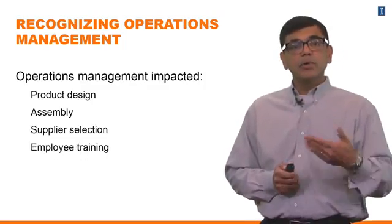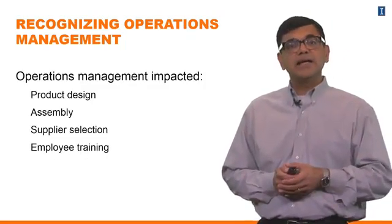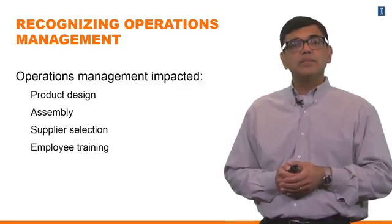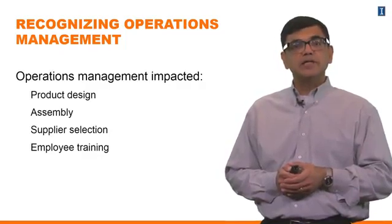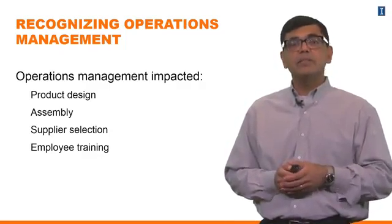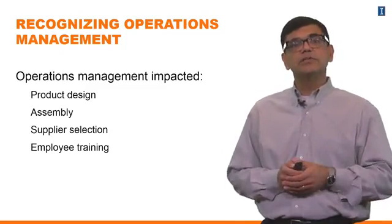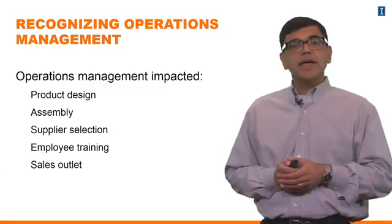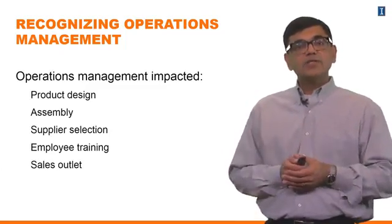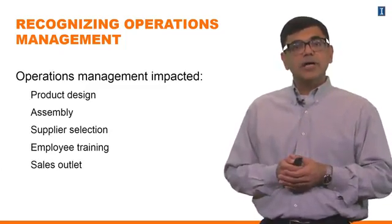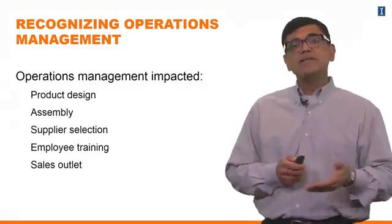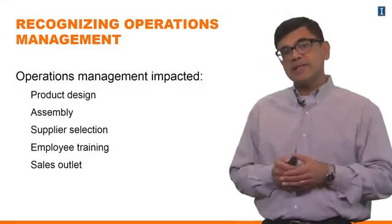The employees working on an assembly line had to be trained in order to make and assemble that product in the right way and make sure that the quality of the product is correct. And finally, it had to be sold to you through a sales outlet.